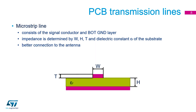The second most used line is the microstrip line. It consists of the signal conductor and bottom ground layer — much simpler. The line impedance is determined by the width of the conductor, height between the top conductor and bottom ground plane, thickness of the top conductor layer, and dielectric constant of the substrate. An advantage of this line is better compatibility with antennas, mainly for chip antennas. Many calculators are available on the web, similarly as for grounded coplanar waveguide.